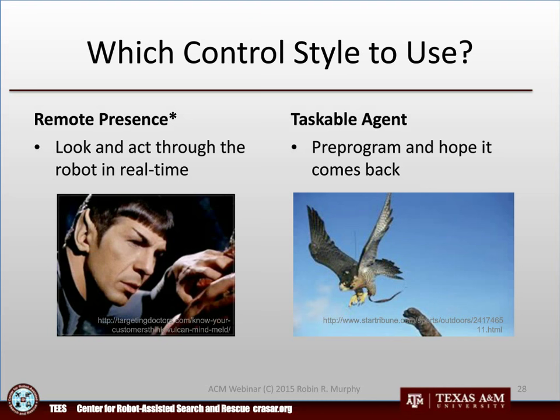With aerial vehicles, we see a lot optimized for taskable agents so they can get really great photogrammetrics — accurate snap, snap, snap photos that you couldn't do manually. But every time we fly a vehicle in that style, a responder comes over and says, 'Look, I need you to stop what you're doing and look over there right now.' So you want to make sure you actually supply both remote presence and taskable agent capabilities. We see the same thing with ground robots.